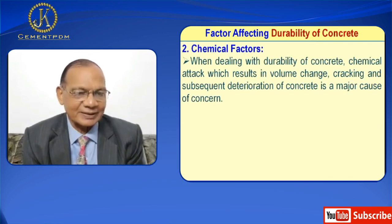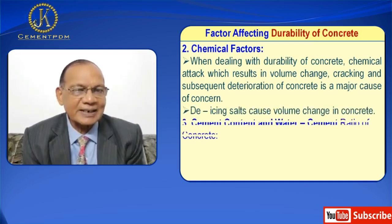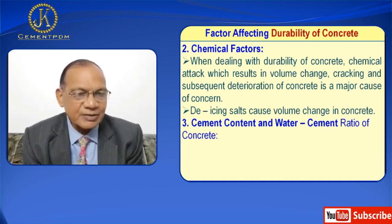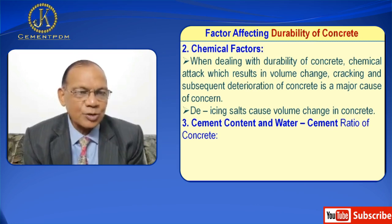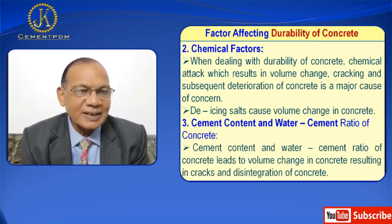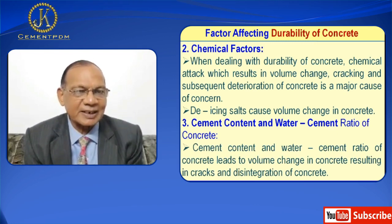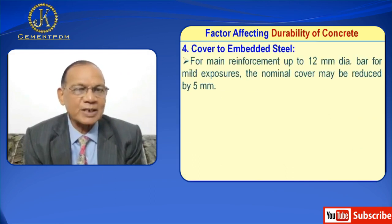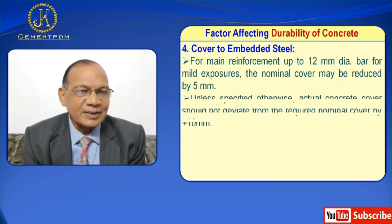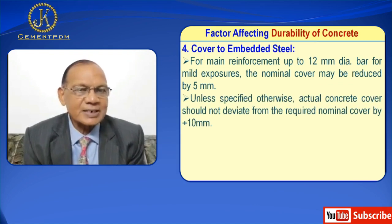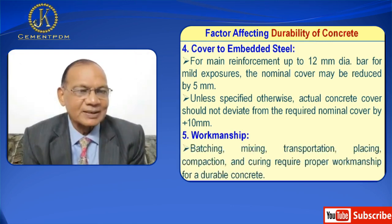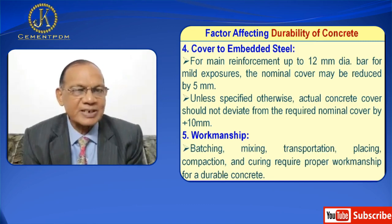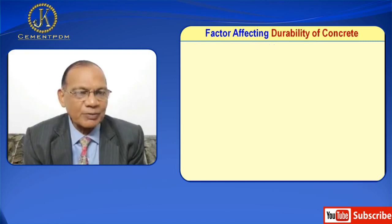Second is chemical factors. When dealing with durability of concrete, chemical attack which results in volume change, cracking, and subsequent deterioration of concrete is a major cause of concern. Toxic salts cause volume changes in concrete. Third, cement content and water-cement ratio of concrete leads to volume change resulting in cracks and disintegration. Number four is cover to embedded steel — for main reinforcement up to 12 mm diameter bar for mild exposure, the nominal cover may be reduced by 5 mm. Unless specified otherwise, actual concrete cover should not deviate from the required nominal cover by more than plus 10 mm. Fifth is workmanship — batching, mixing, transportation, placing, compaction, and curing require proper workmanship for a durable structure.